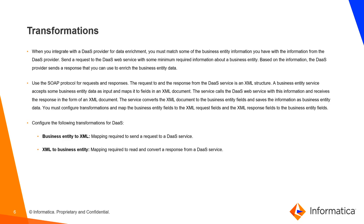When you integrate with the DAST provider for data enrichment, you must match business entity record information with information from the DAST provider. Send a request to the DAST web service with the minimum required information about a business entity. The DAST provider sends a response that you can use to enrich the business entity data using the SOAP protocol. The request and response are XML structures. A business entity service accepts business entity data as input, maps it to fields in an XML document, calls the DAST web service, and receives the response as an XML document, then converts it back to business entity fields.